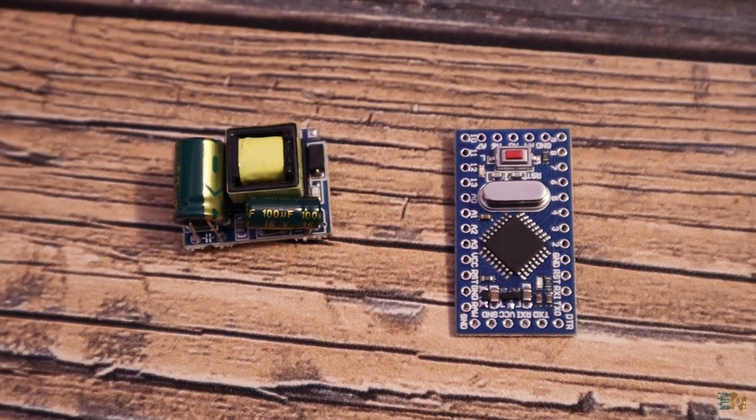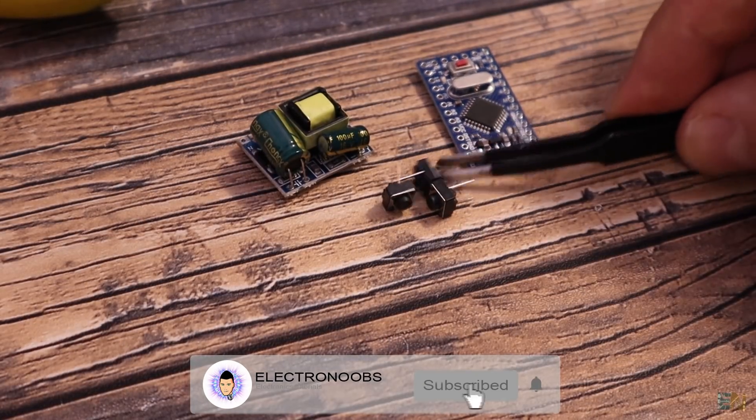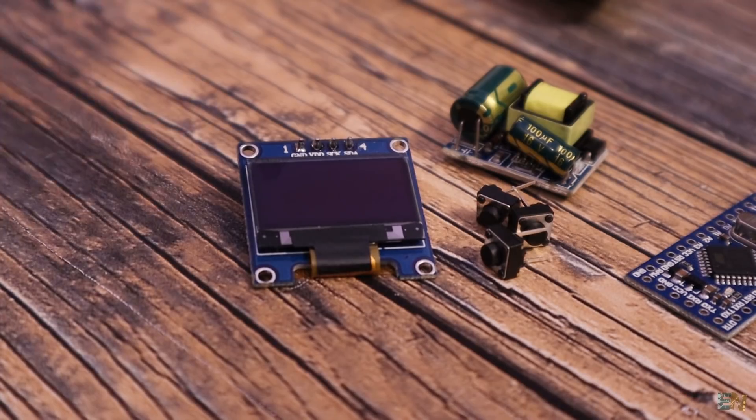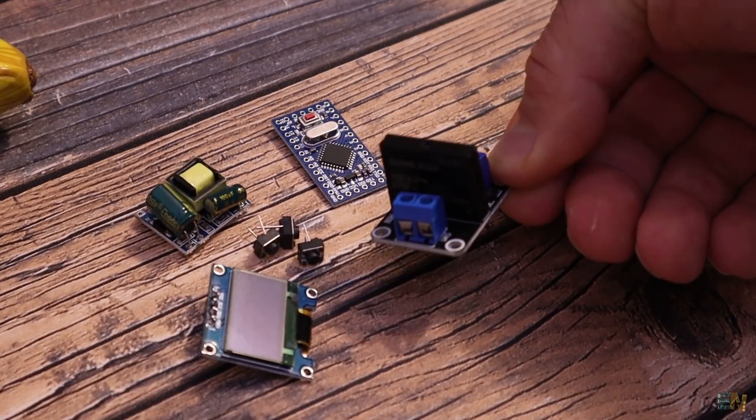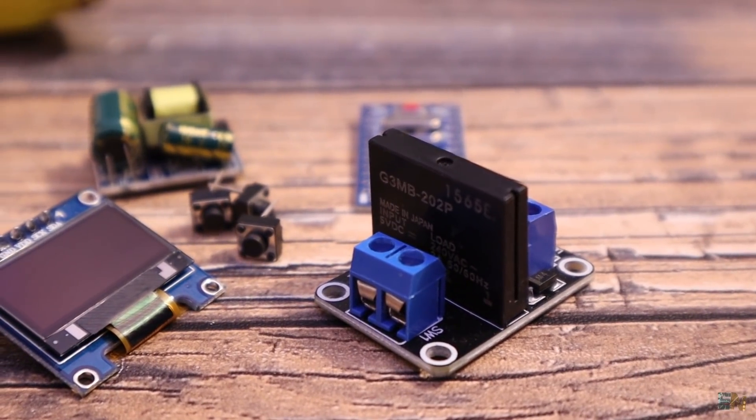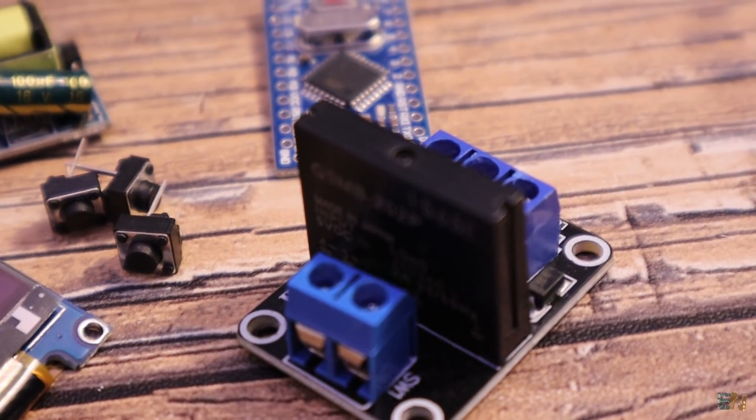So we also need an Arduino Pro Mini because this one is smaller. Three push buttons like these ones, one OLED display with an I2C communication to print the temperature and the set point and an SSR module.